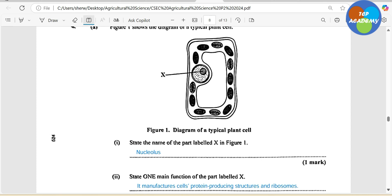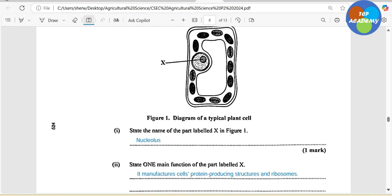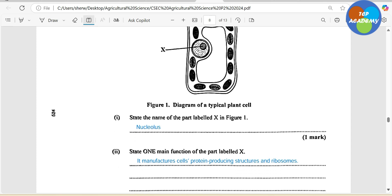Our second question, state the main function of the part labeled X. It manufactures cells, cell protein producing structures and of course ribosomes, that is what it does. Now if you were supposed to ask what's the main function of a nucleus, it pretty much stores DNA or genetic information which we use in cell division.